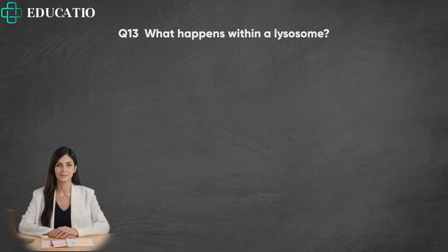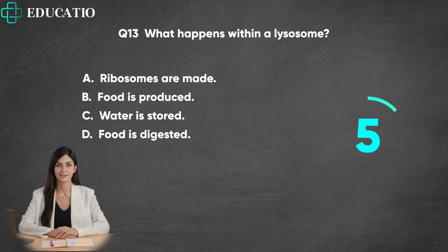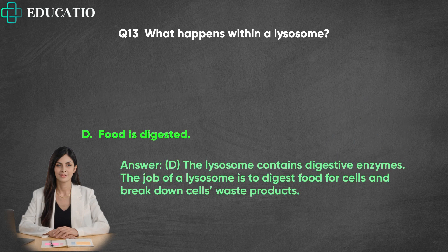Question 13. What happens within a lysosome? A. Ribosomes are made. B. Food is produced. C. Water is stored. D. Food is digested. Answer: D. The lysosome contains digestive enzymes. The job of a lysosome is to digest food for cells and break down the cell's waste products.